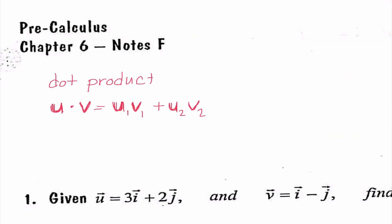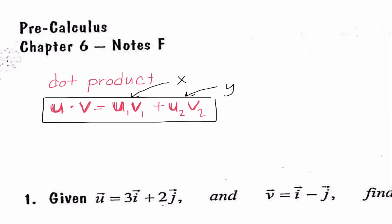When we are finding what we call the dot product — that's when we're multiplying two vectors together — we're going to multiply their first values together, representing the product of those x values, and then add it to the product of the second values, which represents the y values. A key thing to remember when dealing with dot product is that our answer should always be a number. It's not an ordered pair, it's not component form — our answer is going to be a number.